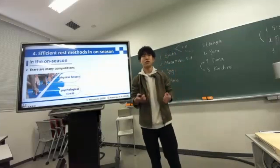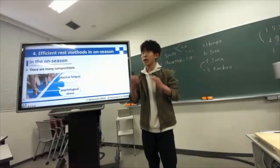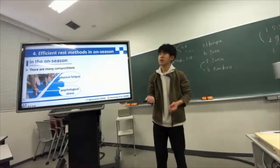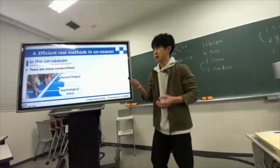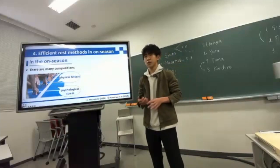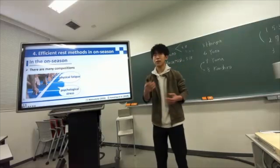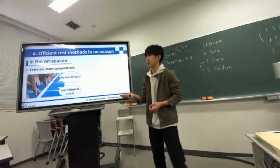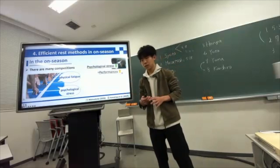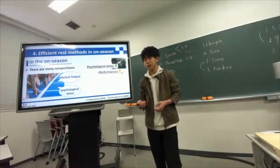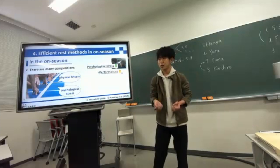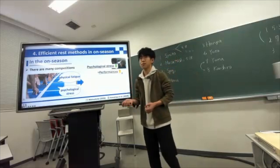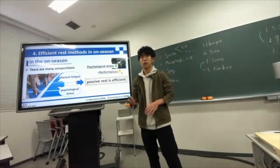Next, it is better to take more passive rest in the on-season and conversely, more active rest in the off-season. According to Matsumoto 2022, in the on-season there are many competitions, so it is necessary to recover physical fatigue and reduce psychological stress. According to Amemia 2019, athletes with less psychological stress have higher competitive abilities such as concentration, judgment, and decision-making ability. Therefore, in the on-season, you should prioritize passive rest to improve performance for competitions.